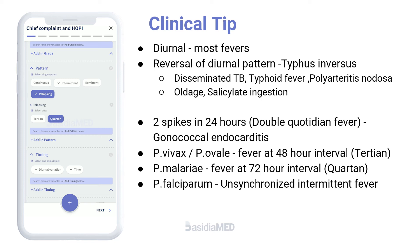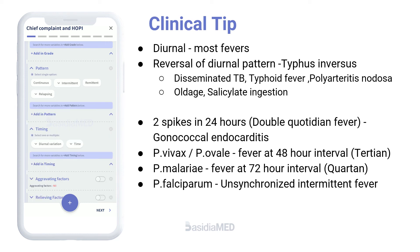Most fevers follow the usual diurnal pattern. Disseminated tuberculosis, typhoid fever, and polyarteritis nodosa are important exceptions in which reversal of the usual diurnal pattern, called typhus inversus pattern, is observed. A reversed pattern is also seen with old age and with salicylate ingestion. The double quotidian fever of gonococcal endocarditis has two spikes in a 24-hour period. Fever at 48-hour intervals suggests Plasmodium vivax or Plasmodium ovale. 72-hour intervals suggests Plasmodium malariae, while Plasmodium falciparum often has an unsynchronized intermittent fever.